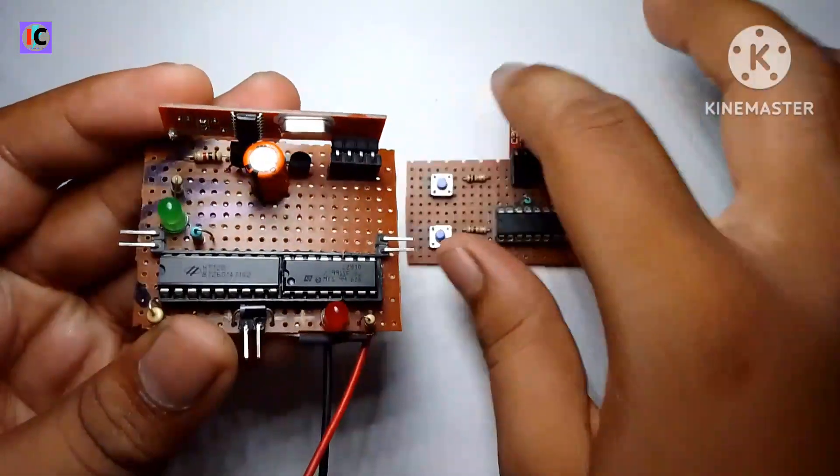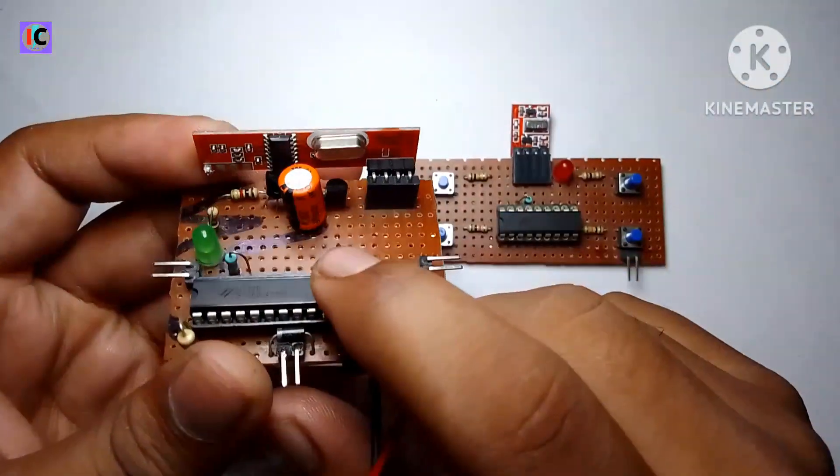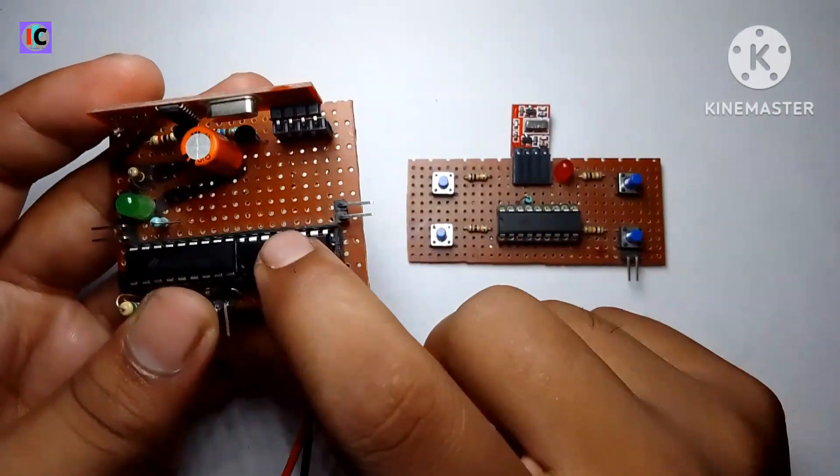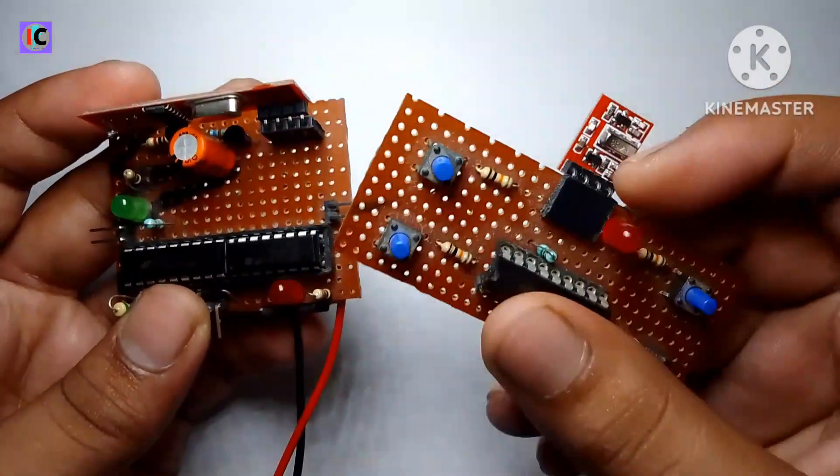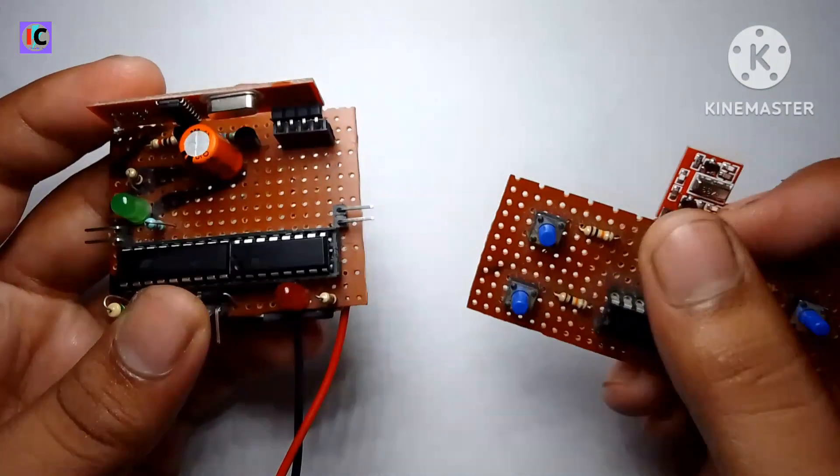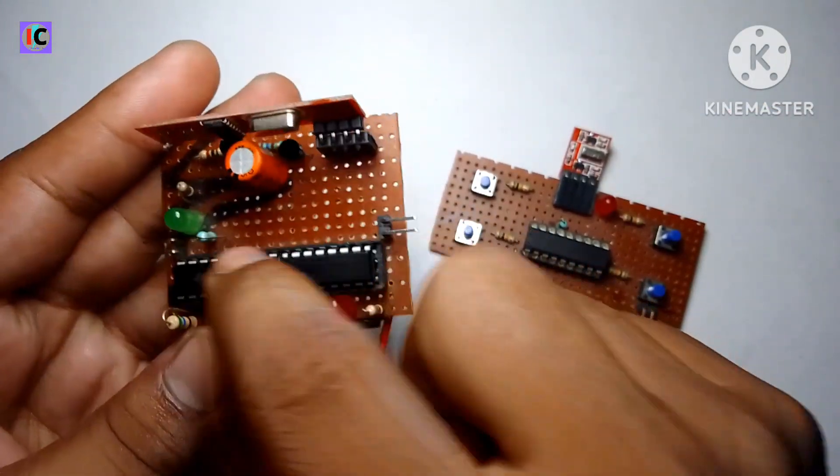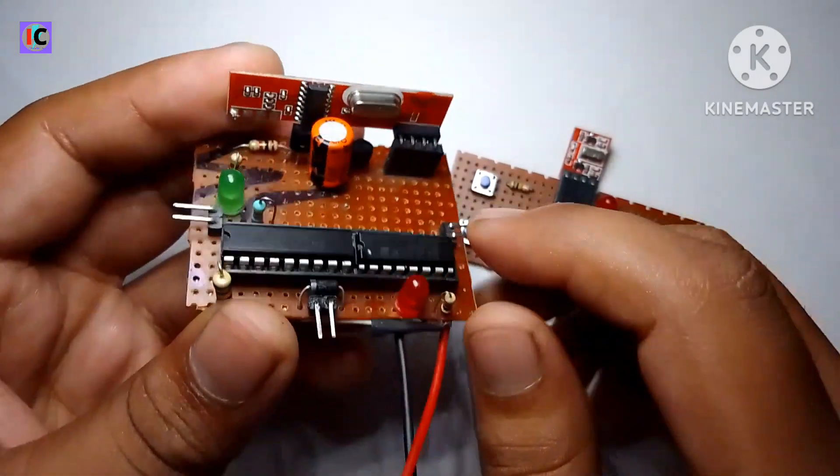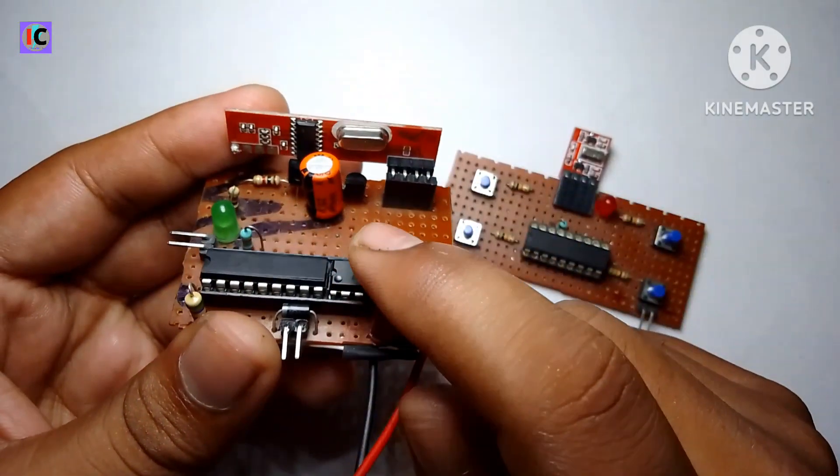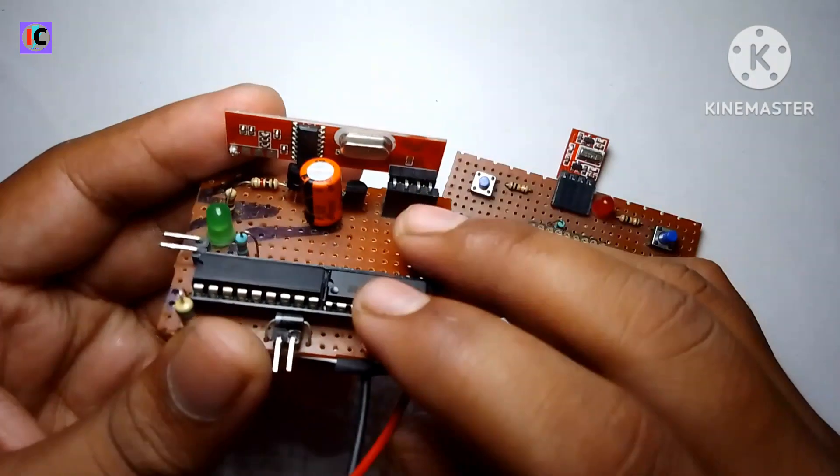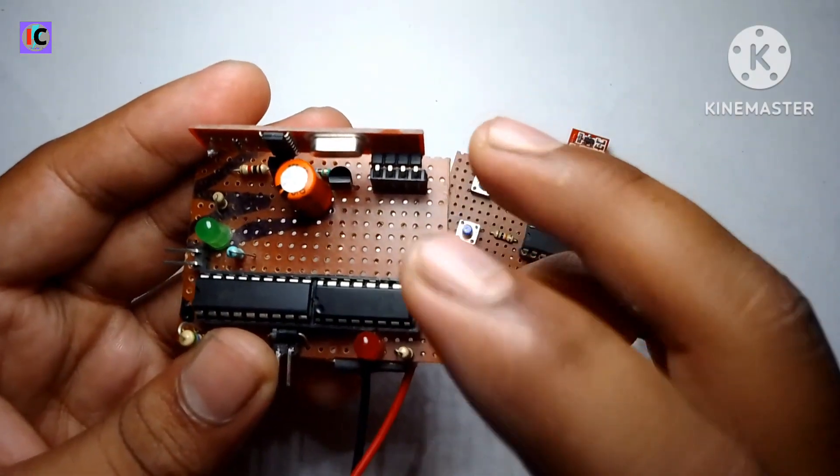But this receiver has a problem. If the receiver is out of range with the transmitter, the outputs will not shut down, which causes the robot to become out of control.